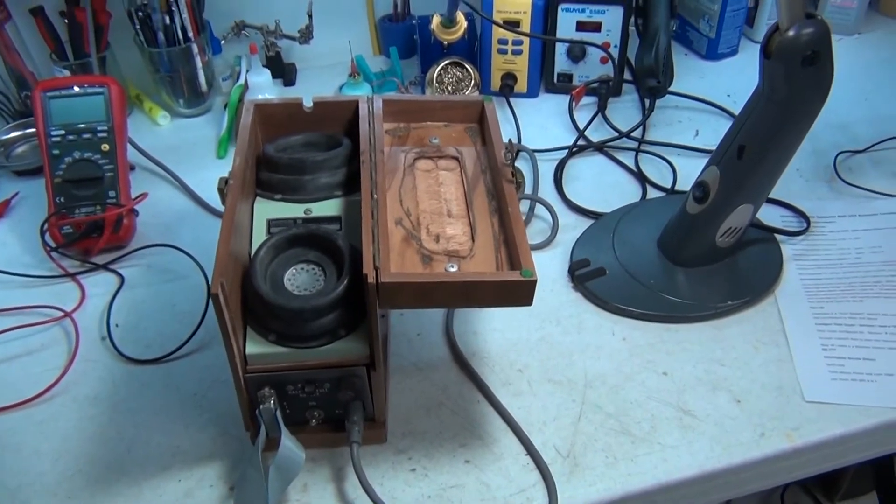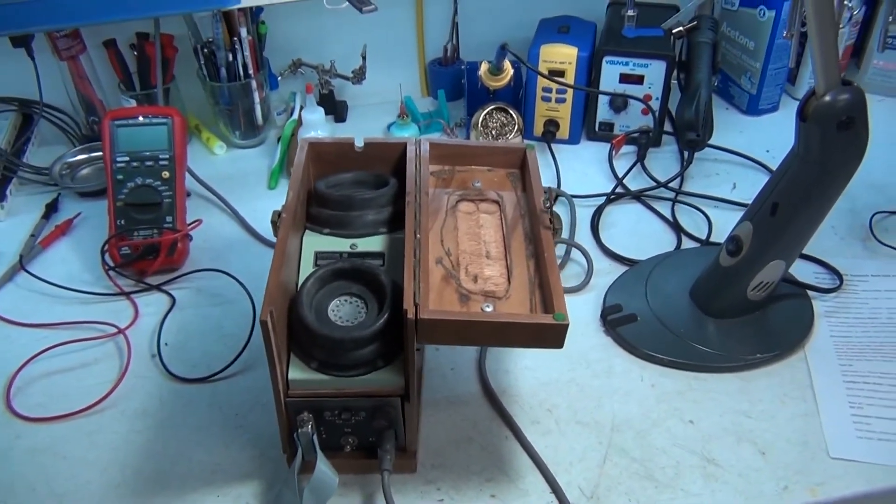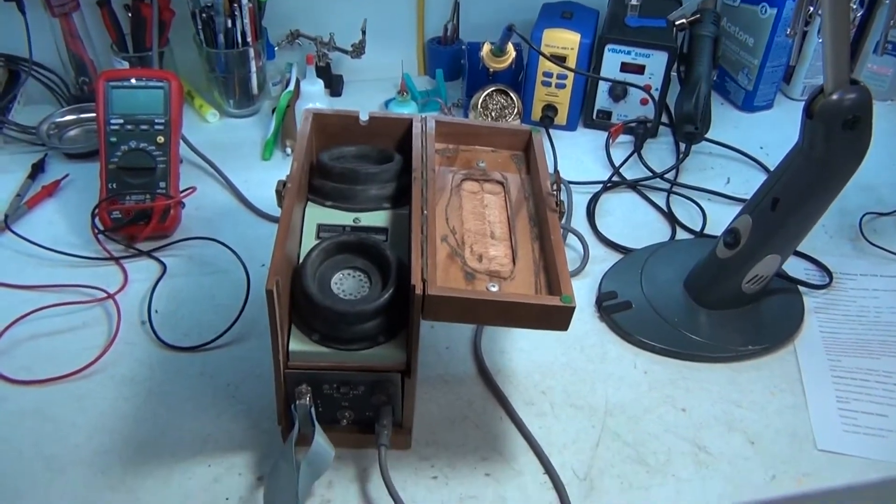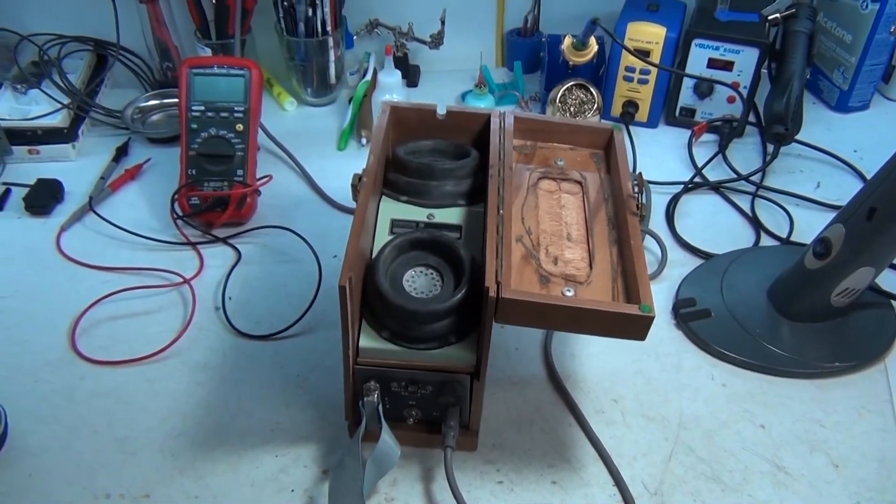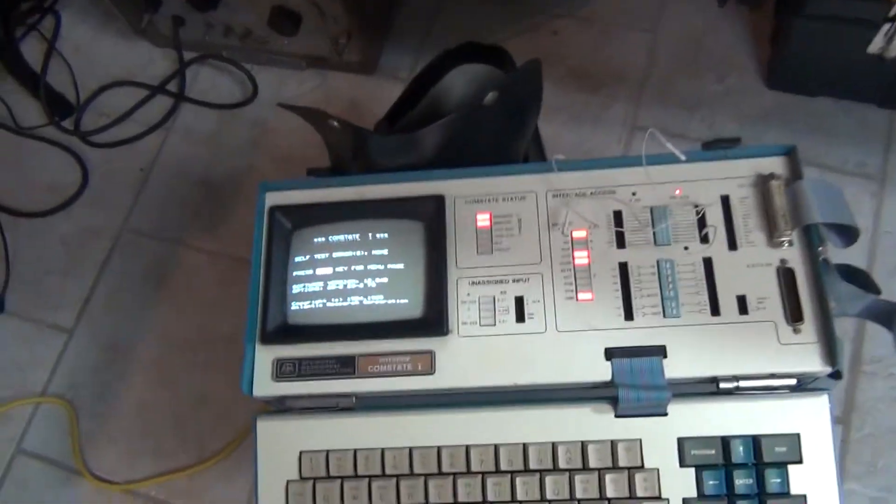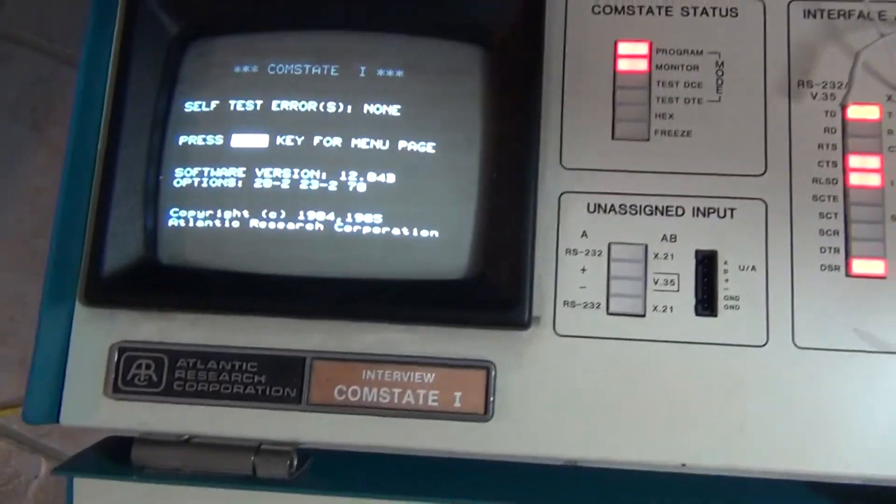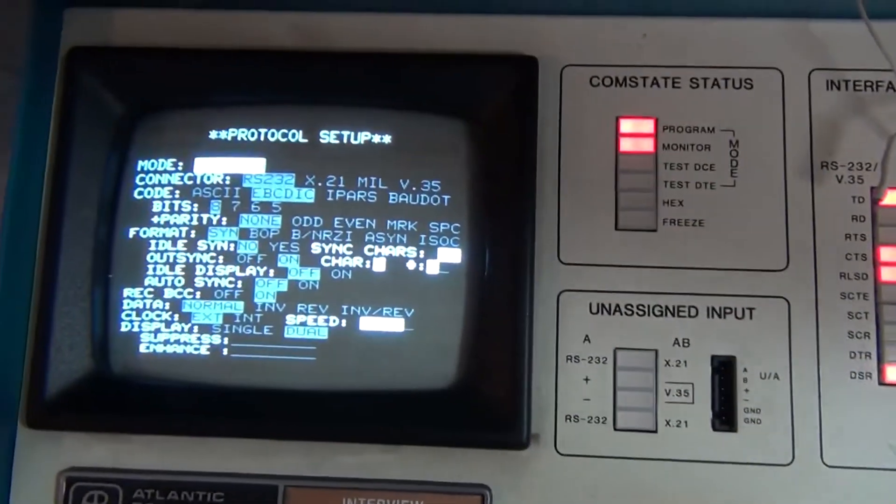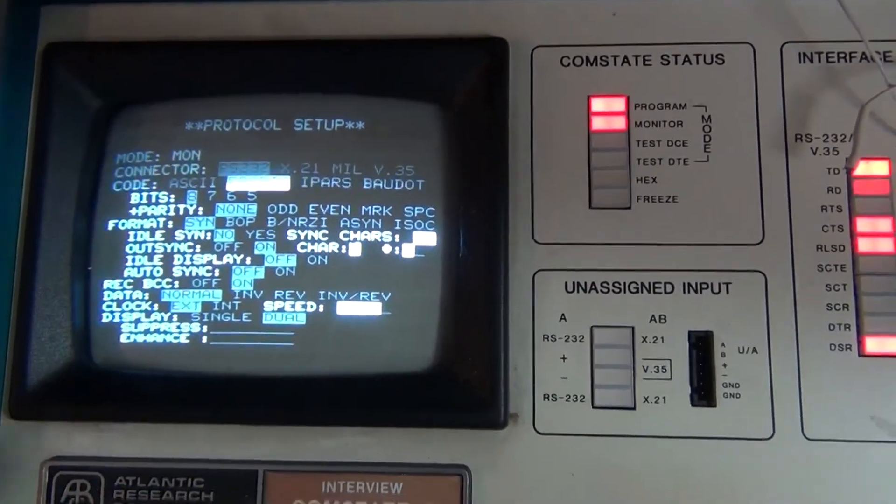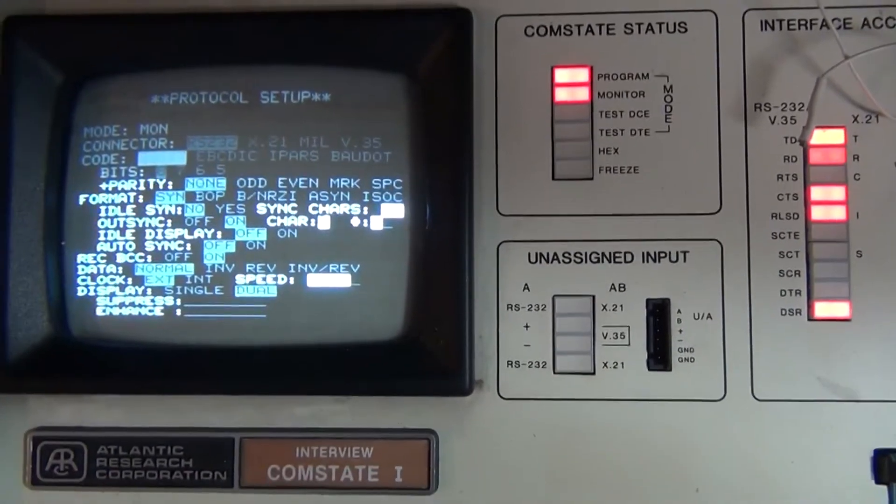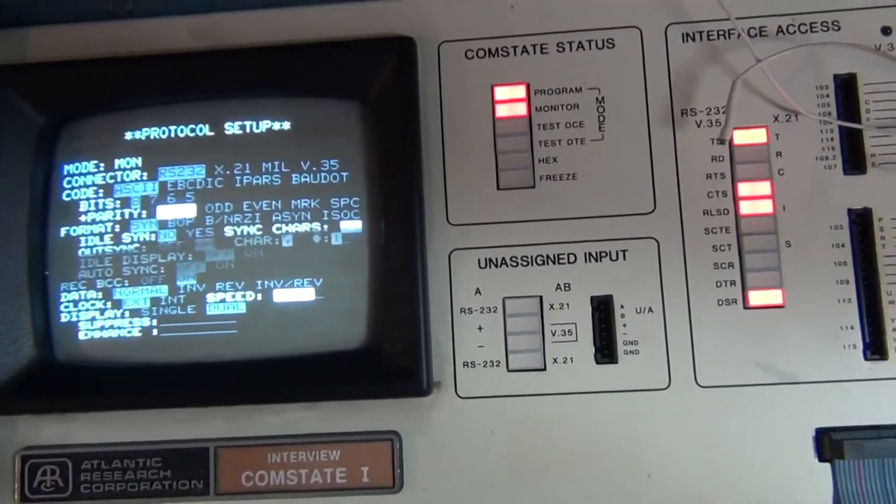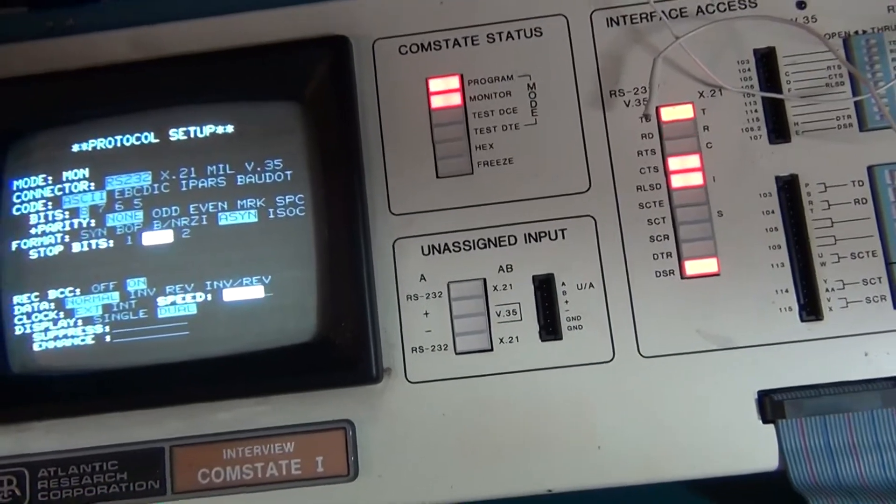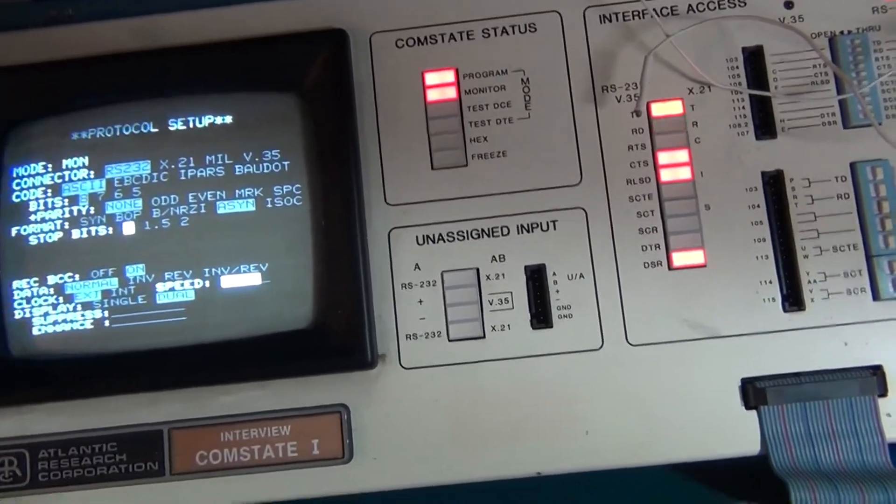So the problem here is I've got the modem, it works, and now all I need is a Western Electric Series 500 rotary dial telephone set, a landline, and someplace to dial into, and I don't have any of those things. So we are going to make do here. First of all, let's set up the data scope. We hit program and protocol setup. We're gonna go to monitor, it's RS-232, it is ASCII, it is eight bits no parity, this is an asynchronous data stream, one stop bit. So 8N1.